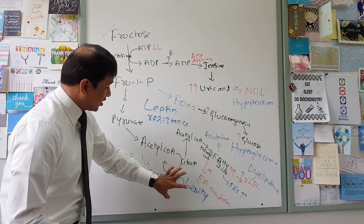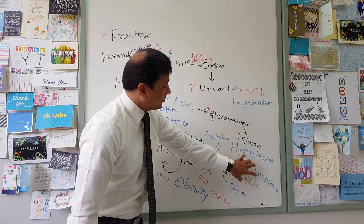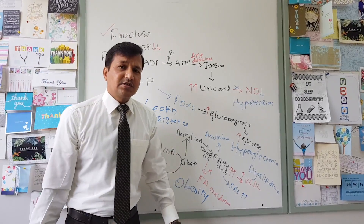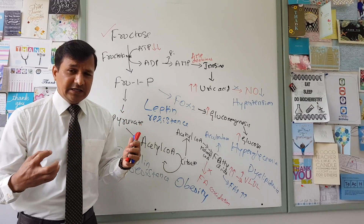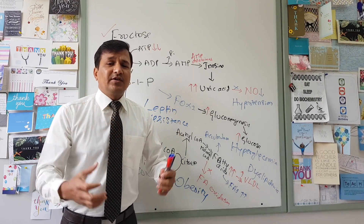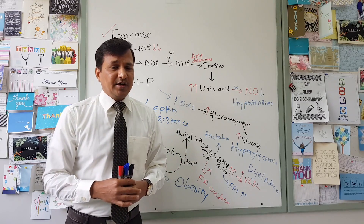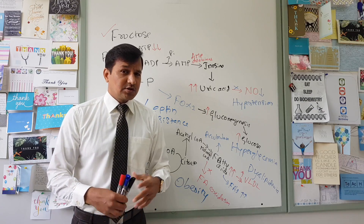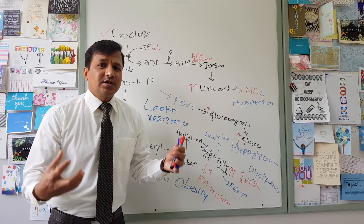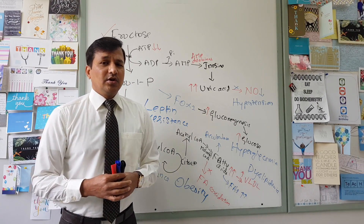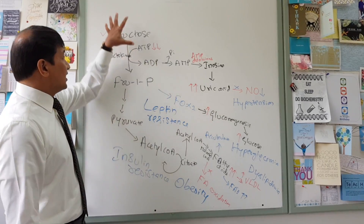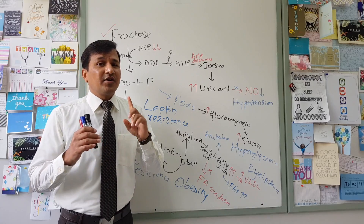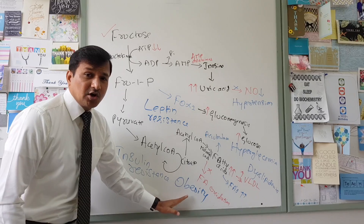To summarize, fructose excess leads to metabolic syndrome — a combination of insulin resistance, obesity, dyslipidemia, hyperglycemia, and hypertension — all due to excess fructose consumption. If your goal is weight loss, it is advisable to eliminate fructose and table sugar from your diet entirely, as it promotes weight gain through all these pathways.